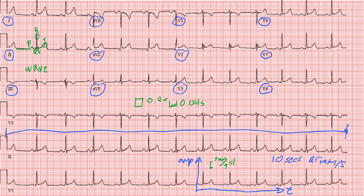Waves together create what's called a complex — a combination of waves. The most obvious complex we talk about is the QRS complex, which is this group of waves. This specific group of waves is known as the QRS complex.